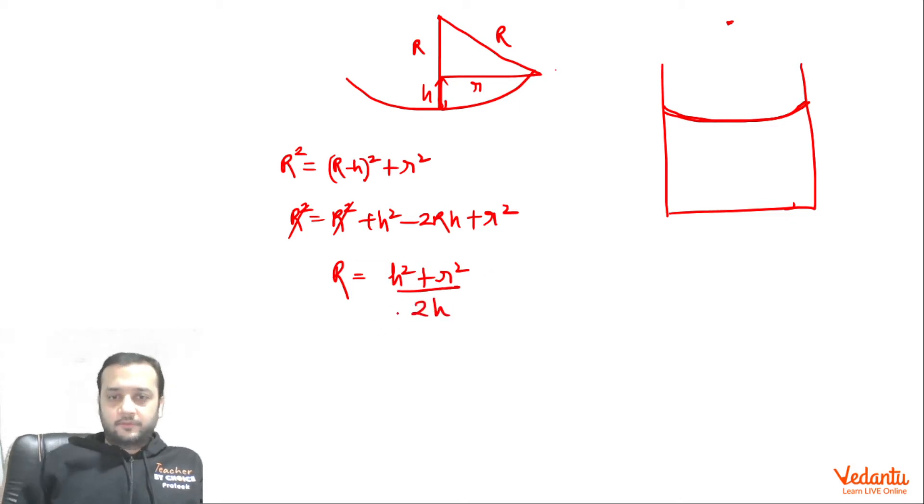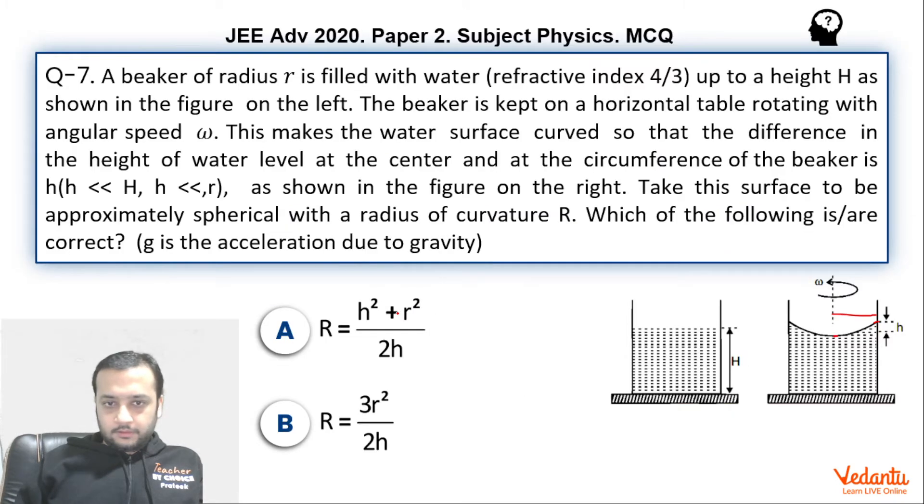So we can say that option A matches h² + r² by 2h. Option B obviously will be wrong because if you see, this becomes 2r² + r² upon 2h. And 2r² cannot be equals to h² because r was given much larger than h. So if this is right, B has to be wrong.